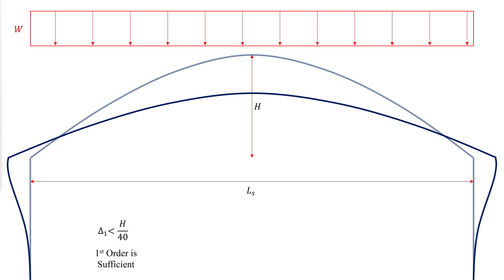This criterion assumes the analysis includes the effect of support flexibility. For arcs with rise-to-span ratio less than 0.1, accurate modeling of support stiffness and second-order effects is critical.